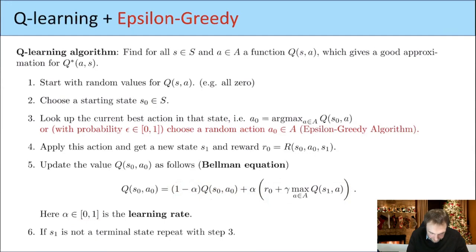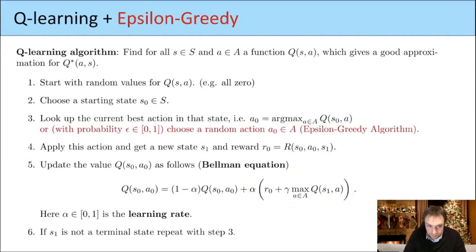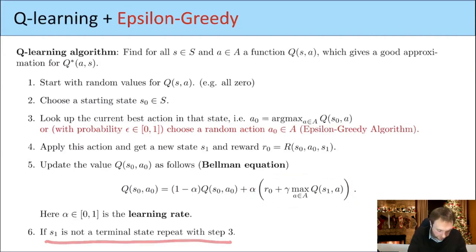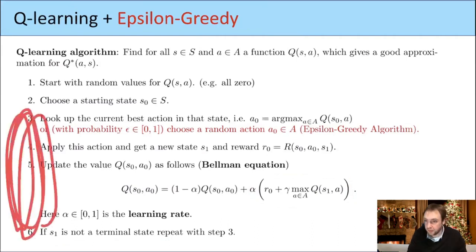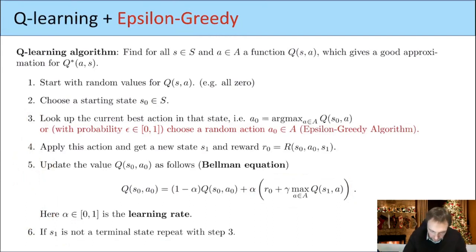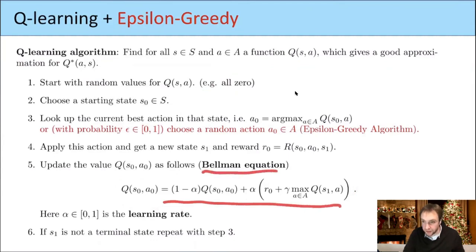Maybe the tricky part is to understand this update term. We do this update, end up at some new state, and if this is not a terminal state, we go back and repeat again and again until we reach a terminal state. Let's try to understand this formula: why does this update using the Bellman equation lead us slowly to these orange numbers we want?